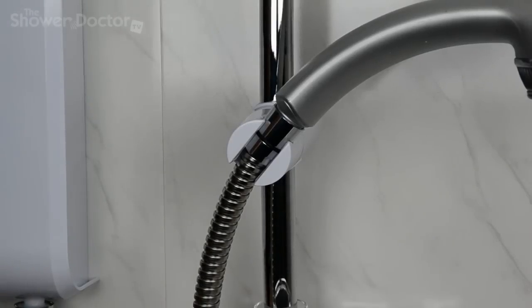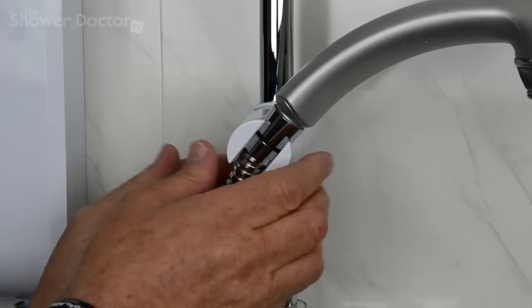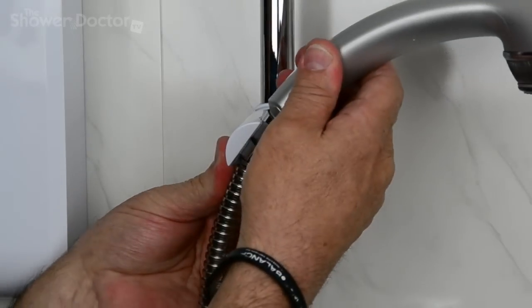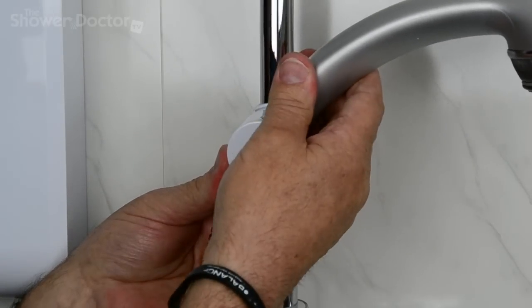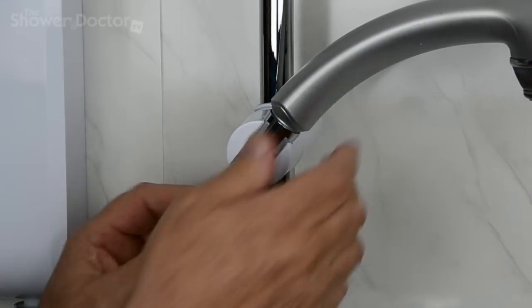Now just to show the difference between the different types of cones on the end of the shower heads. This is the original Triton one again, and you can see it fits in here really snugly, holds the head nice and tightly, and it's really just a perfect fit.